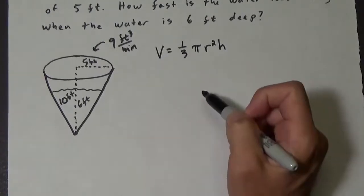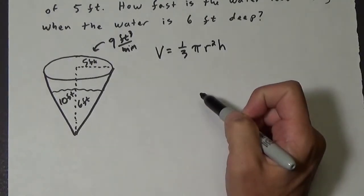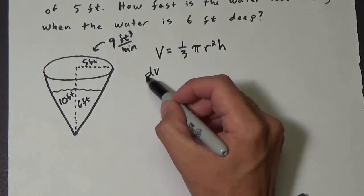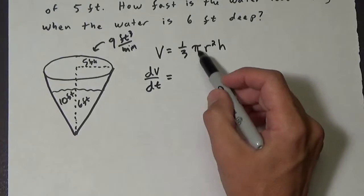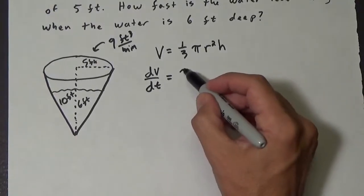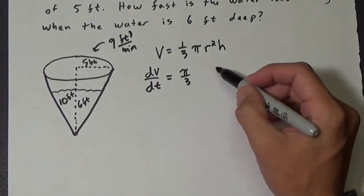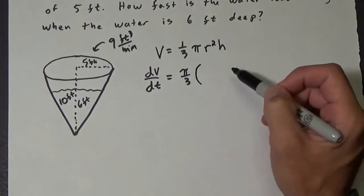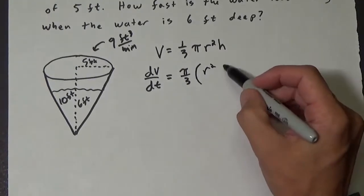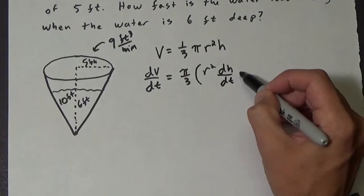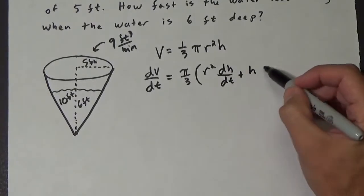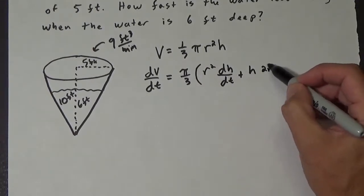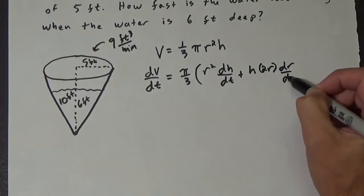So the derivative of volume is dv dt. Okay, now this 1 third pi, that's just a constant, so we're going to just throw that out in front: pi over 3. Now we have a product in here. We have the first, which is r squared times the derivative of the second, which is dh dt, plus the second, which is h times the derivative of the first, which is 2r dr dt.